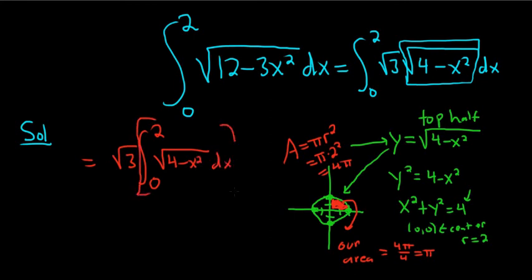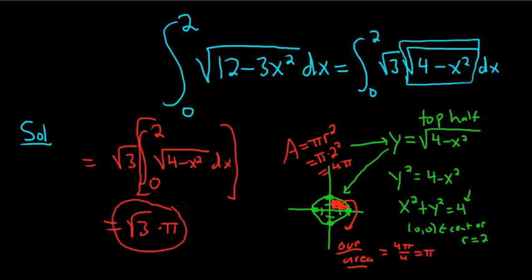That integral in brackets is our area, so the answer is the square root of 3 times pi. This problem is really cool — the solution is really neat. It's from the MIT Integration Bee qualifying exam. I'll post it in the description. I hope that made sense.